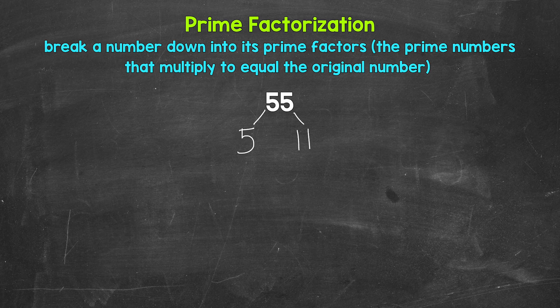Now both 5 and 11 are prime numbers. So we are done here and here. We can't break these down any further.